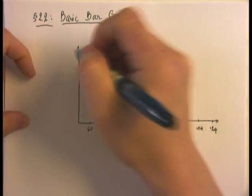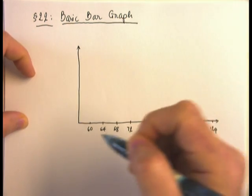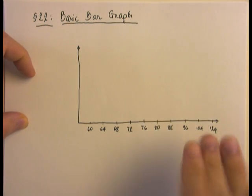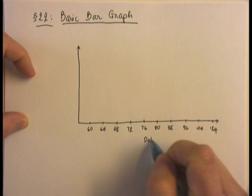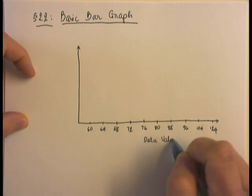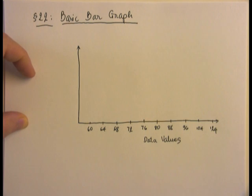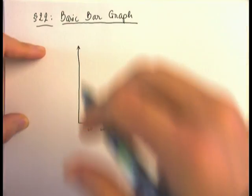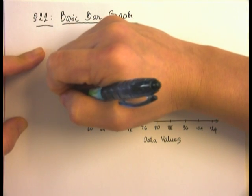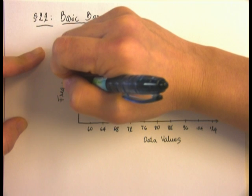Here I have all my data values on the horizontal axis. Now my vertical axis is going to be the scale for all the actual frequencies.